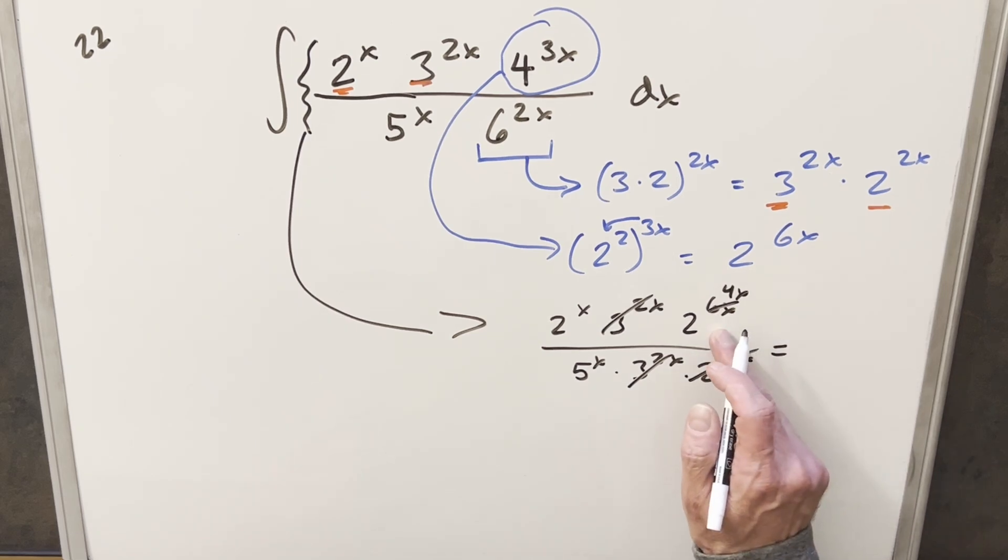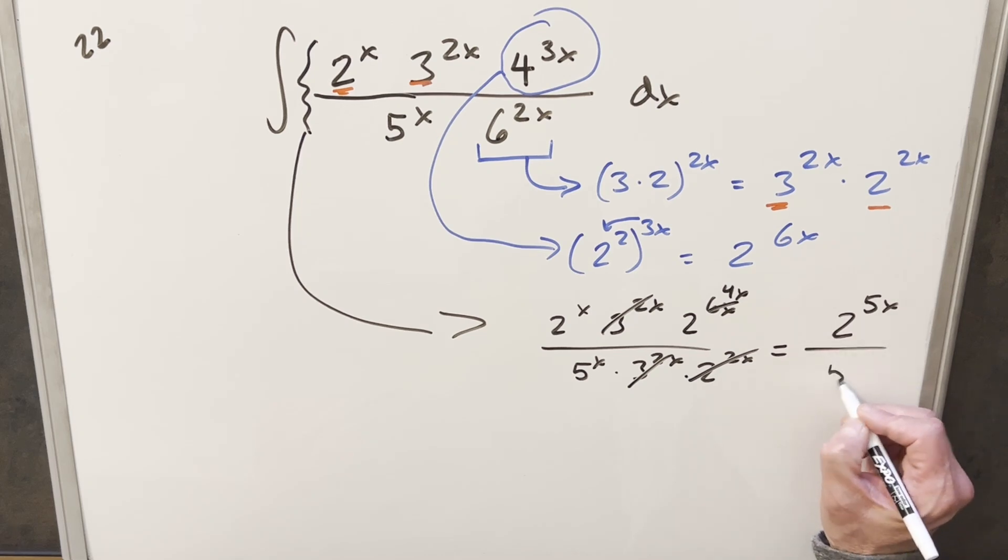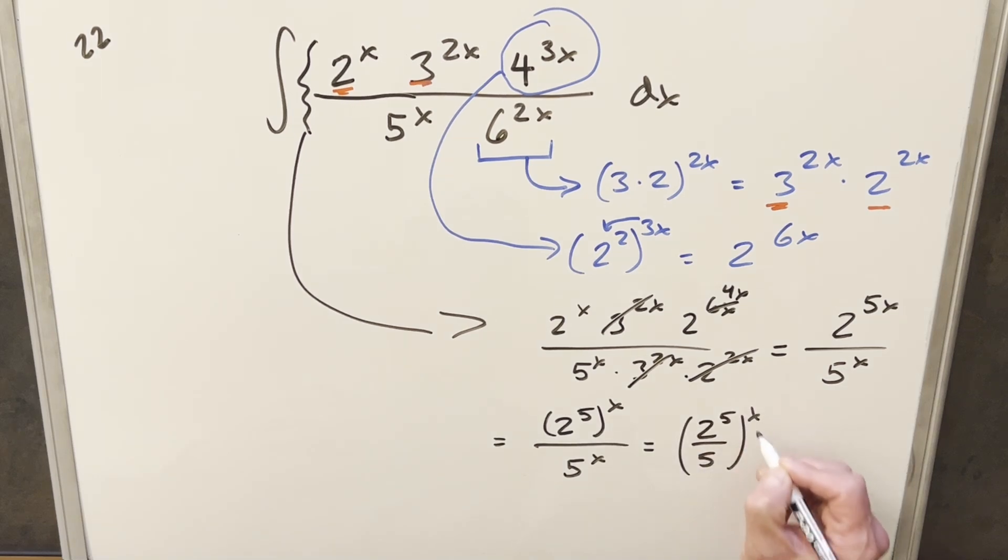Then cleaning this up, 2 to the 4x times 2 to the x, I can write this as 2 to the 5x all over 5 to the x. But now from here, for 2 to the 5x, I can kind of just rearrange this and write it as 2 to the 5 all to the x. This is going to be over 5 to the x. But now that we have the same exponent on both these, I can combine this together and write it as 2 to the 5 over 5 all to the x. 2 to the 5 is just 32, so what we end up with here is 32 over 5 to the x. So now let's just take what we found here and put this back in the integral, and we can finish it off.